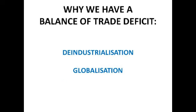Unfortunately, we've got a quite serious balance of trade deficit, and these are the reasons why. Deindustrialisation and globalisation are two really main causes, along with the exchange rate. Deindustrialisation is the fall in the proportion of national output accounted for by the manufacturing sector — basically the manufacturing sector is shrinking in the amount of output it's producing, mainly due to lower costs elsewhere.